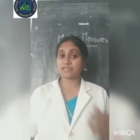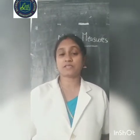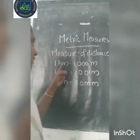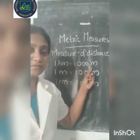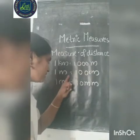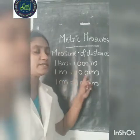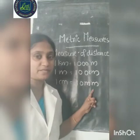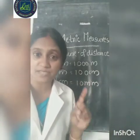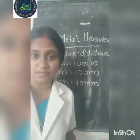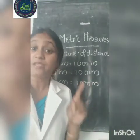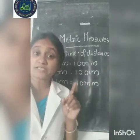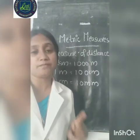Let's study how to convert the units, beginning with the measure of distance. 1 kilometer is equal to 1000 meter. 1 meter is equal to 100 centimeter. And 1 centimeter is equal to 10 millimeter.